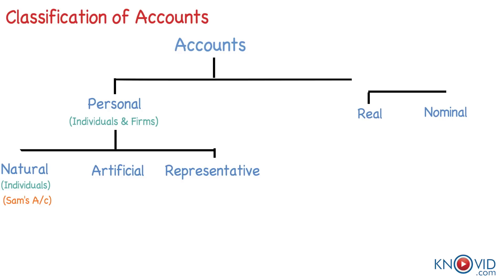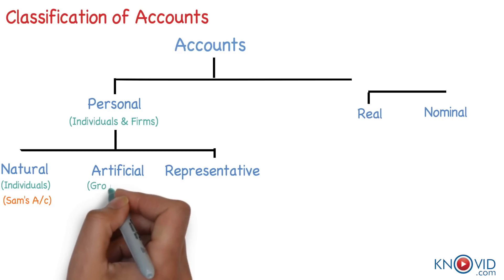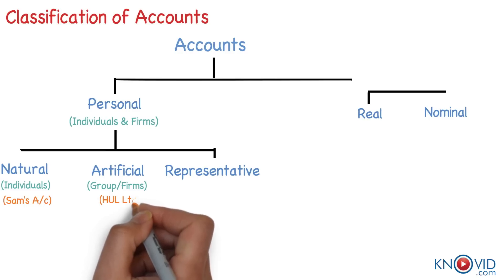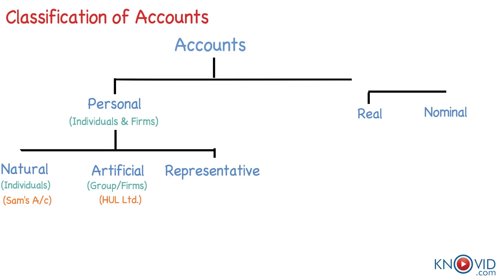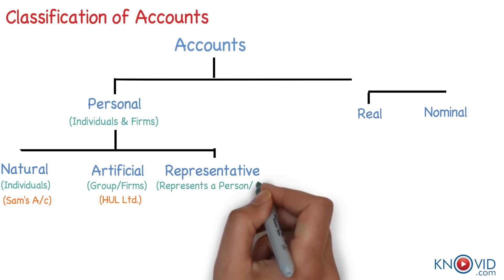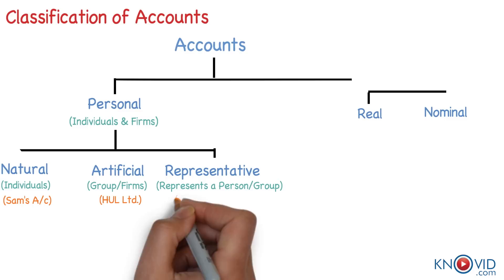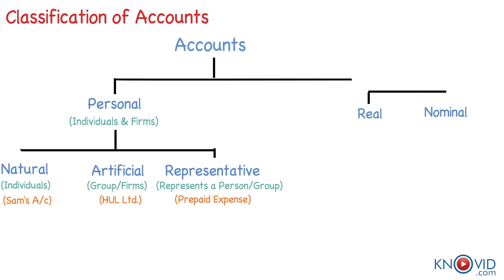Artificial accounts are those that represent either a group of people or firms, like Hindustan Lever Limited. Representative accounts are those that represent a particular person or a group of persons — for example, outstanding salary account, prepaid account, etc.